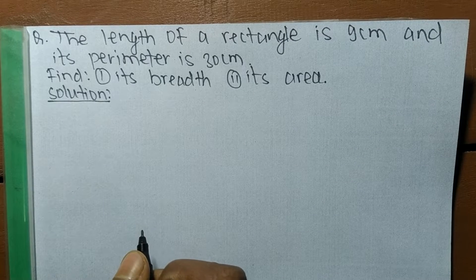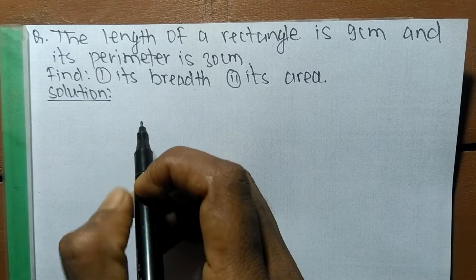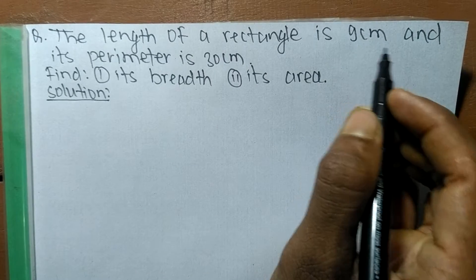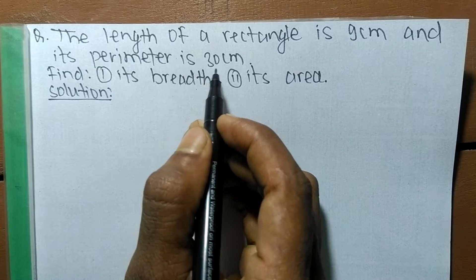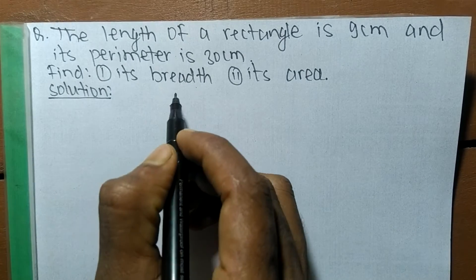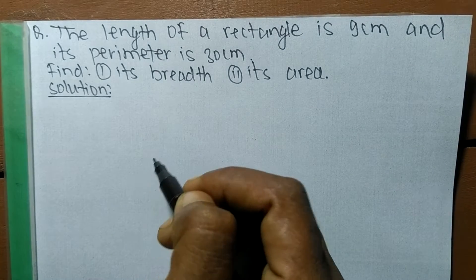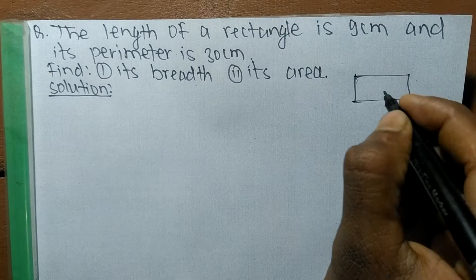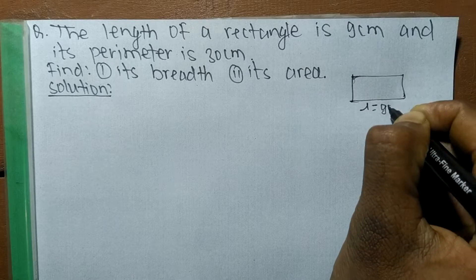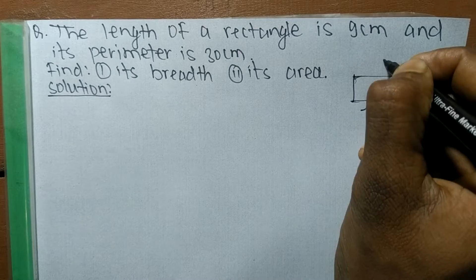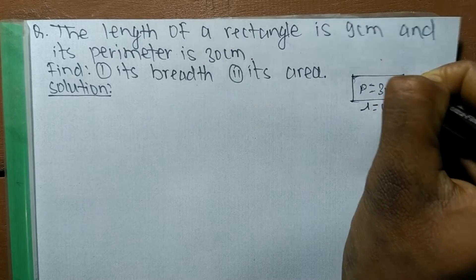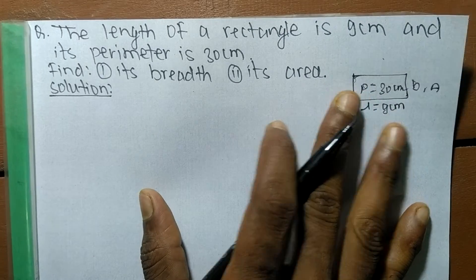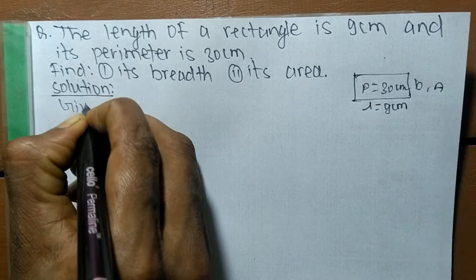Today in this video we are going to solve a word problem. The question is: the length of a rectangle is 9 centimeters and its perimeter is 30 centimeters — find its breadth and its area. Here is a rectangle whose length is 9 centimeters and its perimeter is 30 centimeters, and we have to find out its breadth and area. First, let's write what we have been given.